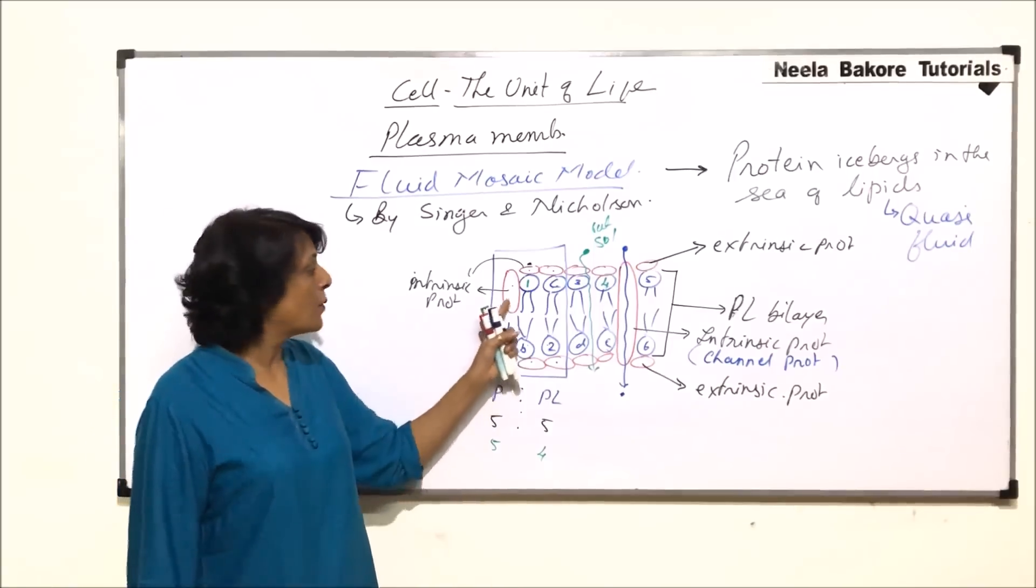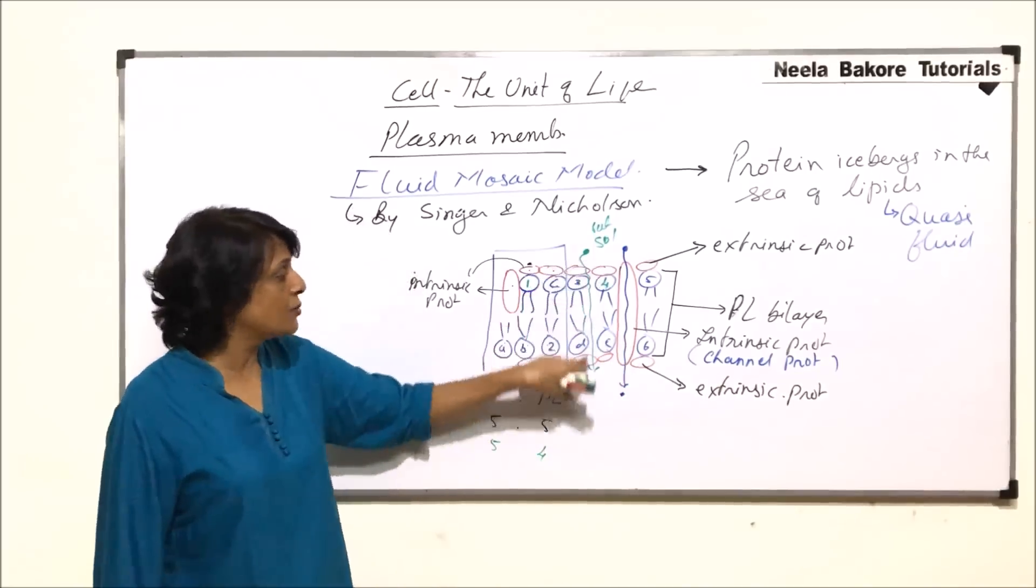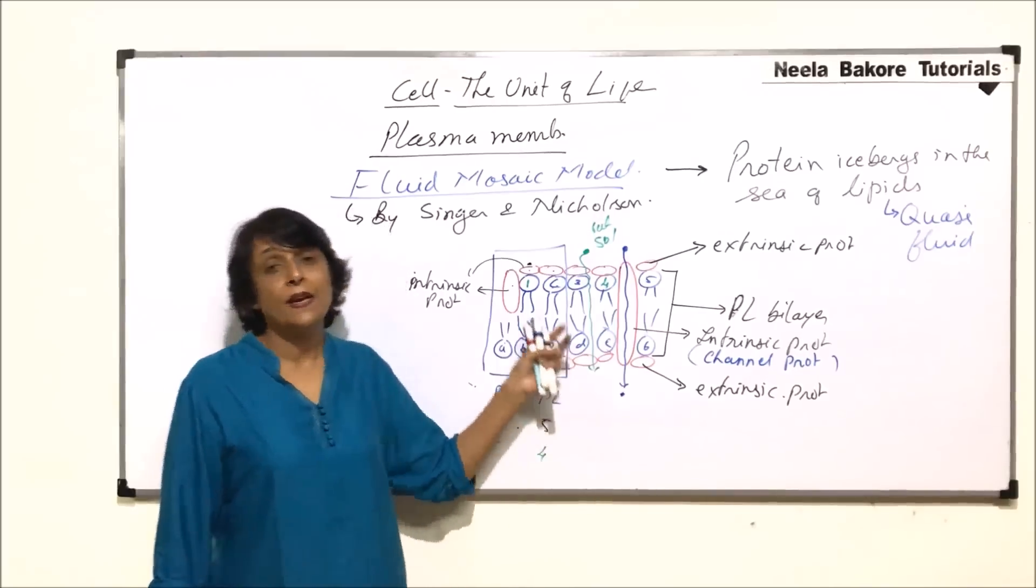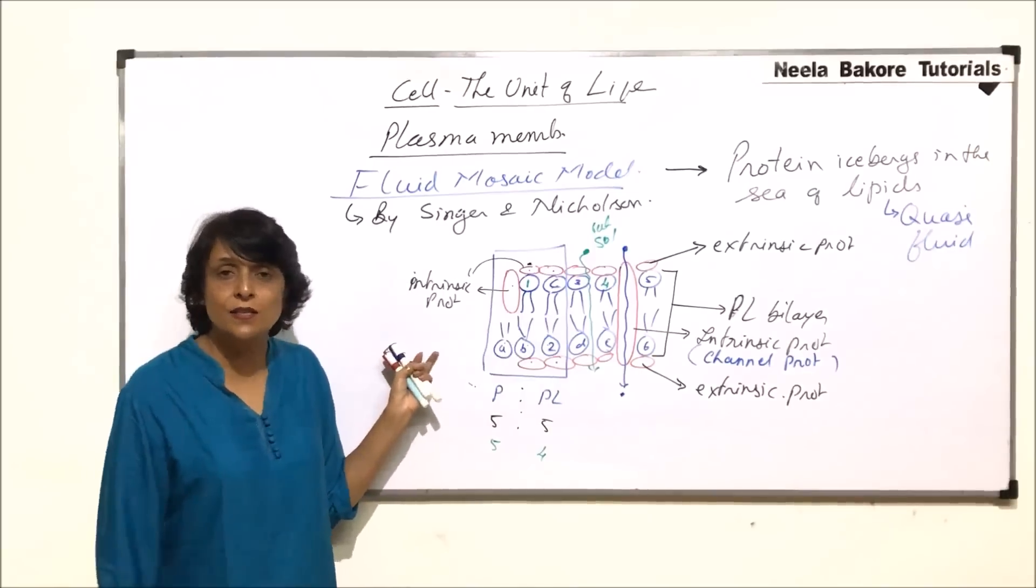So now what we know is that it is made up of proteins and phospholipids. Proteins are alpha globular. Phospholipids are amphipathic. They show two types of movements. Proteins are of two types, intrinsic and extrinsic. And this model explains all the properties of plasma membrane. Plus, there are two informations added from previous scientists' information.